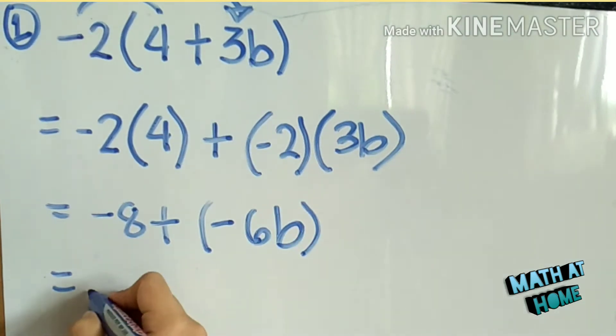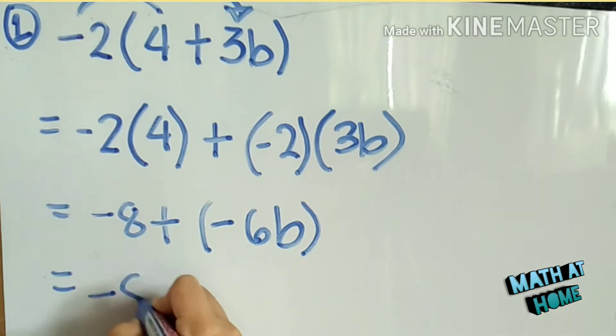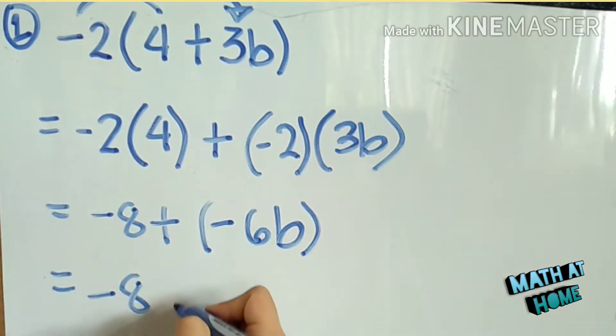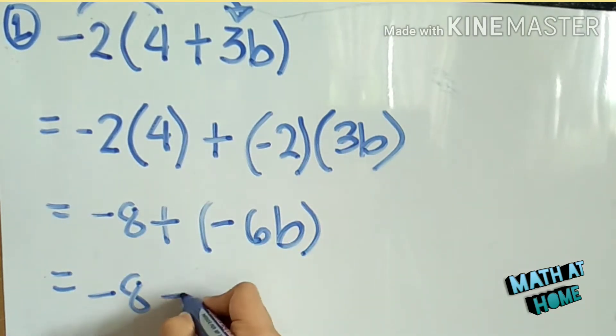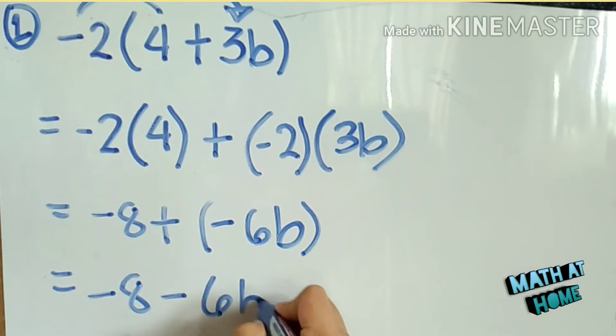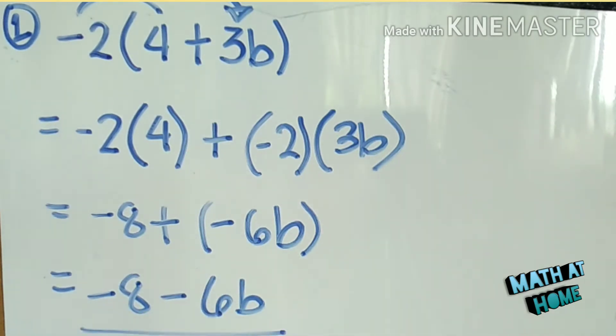We simplify: positive times negative is negative. So we get negative 8 minus 6b. This is now the product.